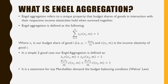So what is Engel aggregation? Engel aggregation refers to a unique property that budget shares of goods, in interaction with their respective income elasticities, hold when summed together. Engel aggregation is defined as the summation of all the budget shares of good i, where i goes from 1 to n, times their respective income elasticities, which should equal 1.